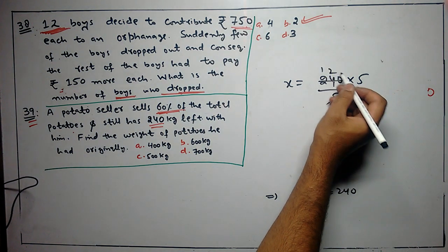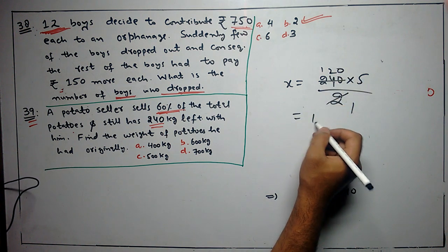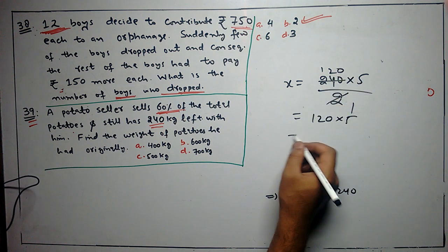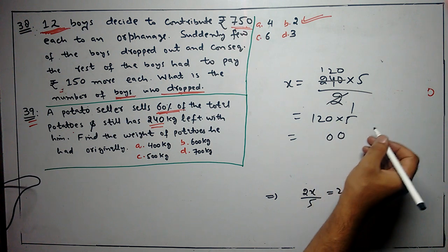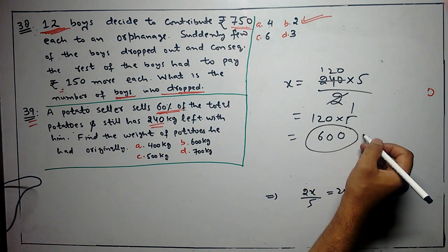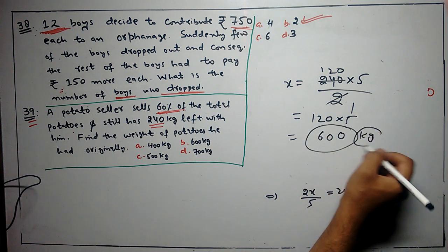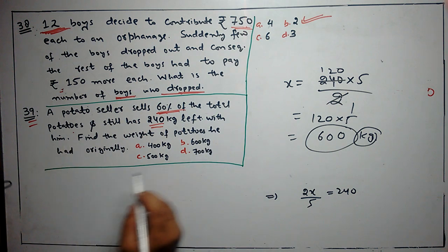So here we will get 120 into 5, we will get 600. 600 kg is the original amount. So in this question we will answer B part. Thank you.